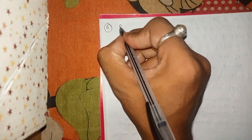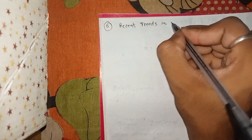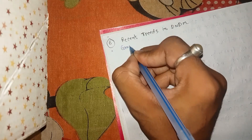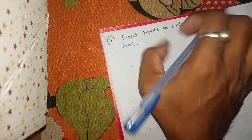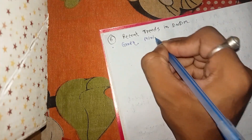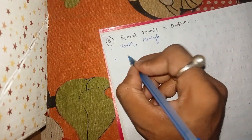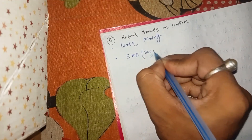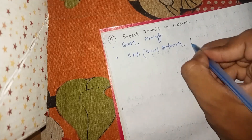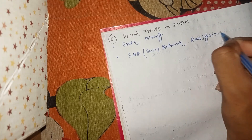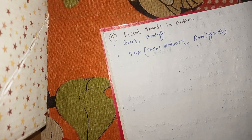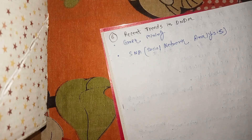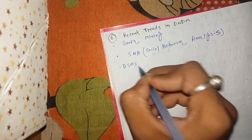The last chapter covers Recent Trends in data warehouse and data mining. Advanced concepts include graph mining — how we can extract features and insights from a graph network. Theoretical questions on social network analysis (SNA) can also be asked. Another important concept is the Data Stream Management System (DSMS).